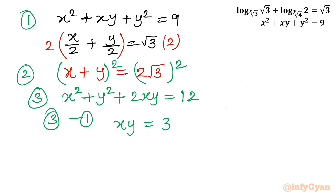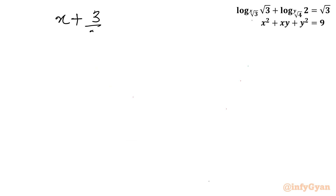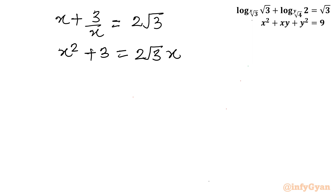Our reduced system is: x plus y equals 2 root 3, and xy equals 3. From the second equation, y equals 3 over x. Substituting into the first equation: x plus 3 over x equals 2 root 3. Multiplying through by x gives x squared plus 3 equals 2 root 3 times x, and rearranging: x squared minus 2 root 3 x plus 3 equals 0.